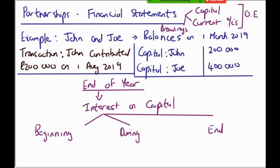Good day accounting students, Grade 11. Let's have a look at financial statements for partnerships. In our particular example we've got John and Joe. The balances on the 1st of March 2019 were 200,000 and 400,000 - those are the capital balances. For now we're just going to focus on the capital accounts.